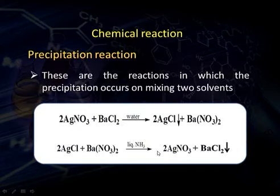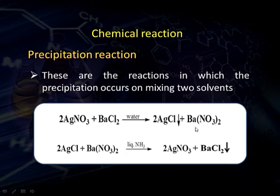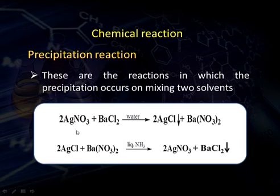In precipitation reactions, a precipitate forms when two solutions are mixed. For example, silver nitrate plus barium chloride in water forms a precipitate of silver chloride plus barium nitrate in solution. But when the mixture of silver chloride and barium nitrate is dissolved in liquid ammonia, silver nitrate is obtained plus a precipitate of barium chloride — showing different reactions in different solvents.